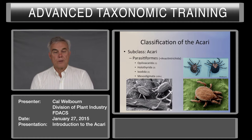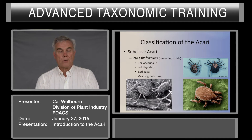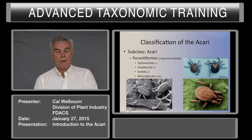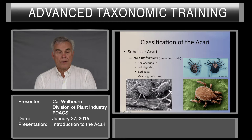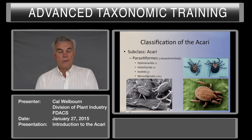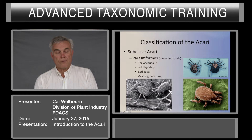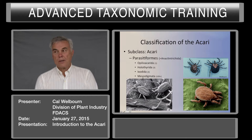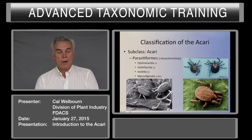We'll start with the parasitiformes. There are four major groups within the parasitiformes: the opilioacarids, the holothyroids — these are small groups that you're not likely to find in an agricultural situation. The Ixodida or the ticks show up in agricultural situations or on animals used in agriculture. Mesostigmata range from predators to parasites, and many of our predators on plants come from Mesostigmata, especially in the family Phytoseiidae.